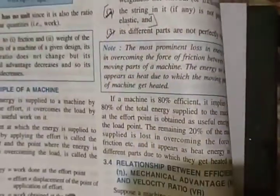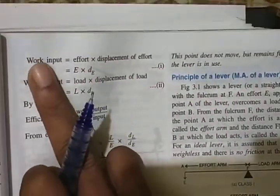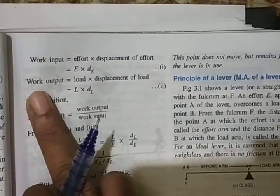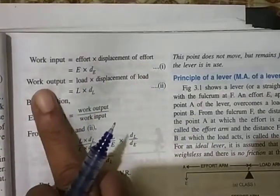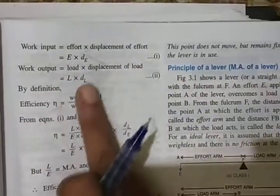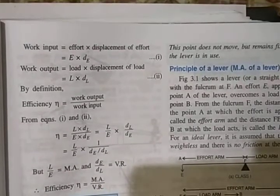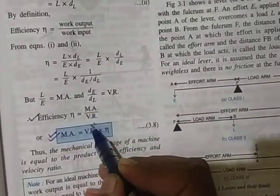Next is the relationship between efficiency, mechanical advantage, and velocity ratio. This derivation sometimes comes in exams. Work input is effort multiplied by distance traveled by effort. Work output is load multiplied by displacement of load, since work equals force times displacement. From this you get the relationship: efficiency equals MA upon VR, or MA equals efficiency multiplied by VR. You should know this derivation.